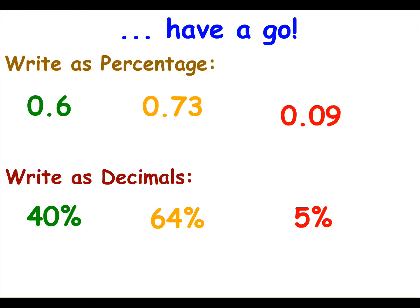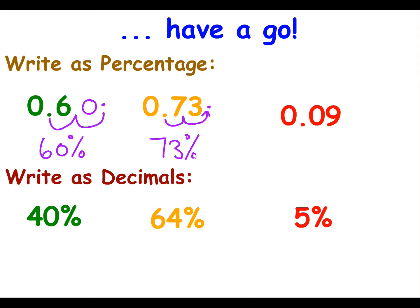Now let's practise going from decimals to percentages and percentages to decimals. For the first one, to convert a decimal to a percentage, multiply by 100. So 0.6 — moving the decimal point two places right and filling with a zero — gives 60%. For 0.73, multiply by 100 and we get 73%. And for 0.09, multiply by 100 and that gives us 9%.